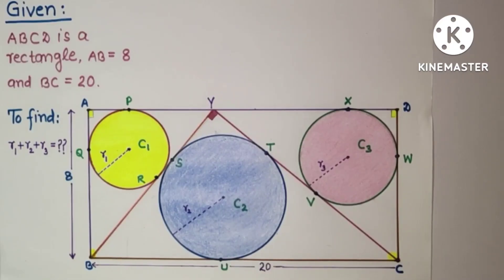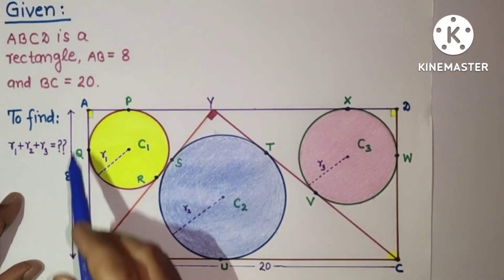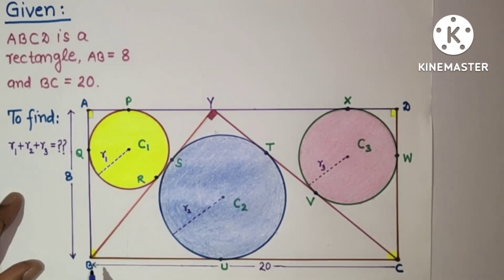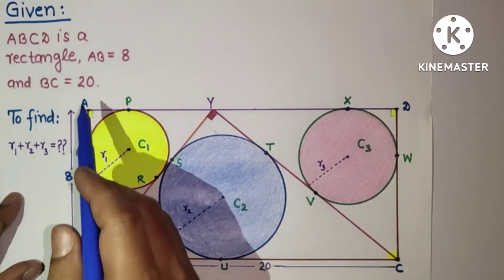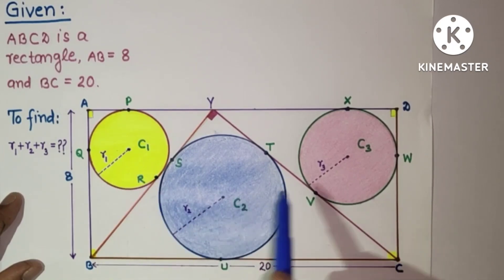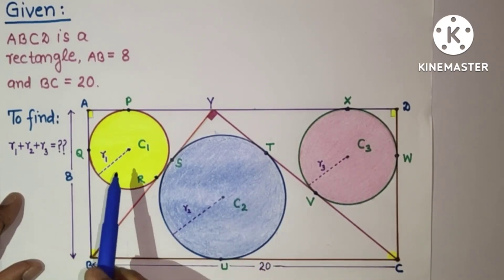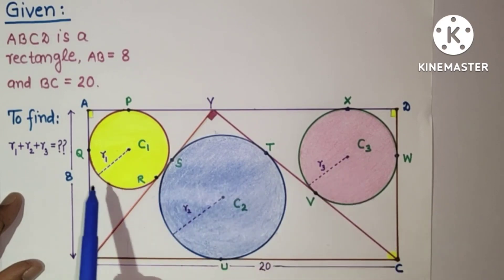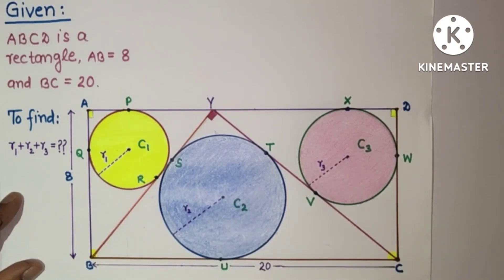Hello friends and viewers. In today's video we will discuss a very interesting question. We are given a rectangle ABCD whose length is 20 units and breadth is 8 units, and as shown in the figure, there are three circles drawn with radii r1, r2, and r3. We have to find the sum of these three radii.